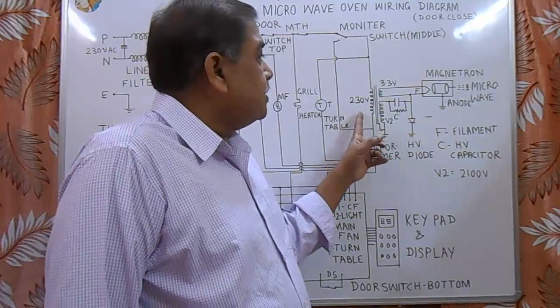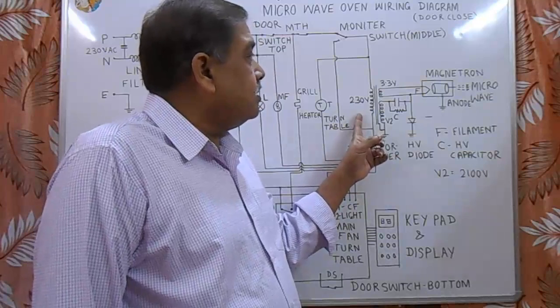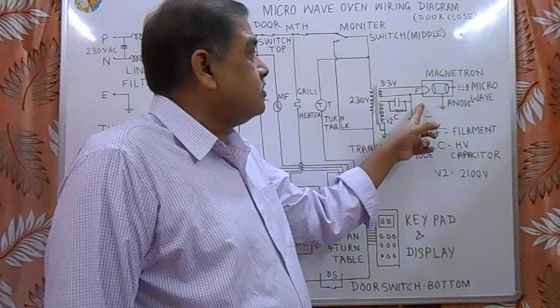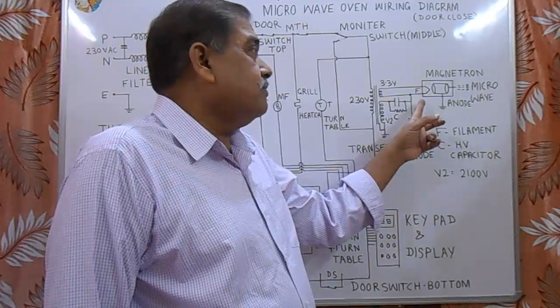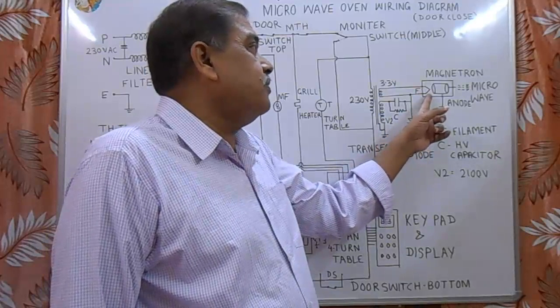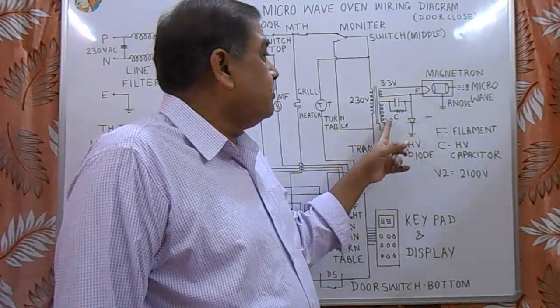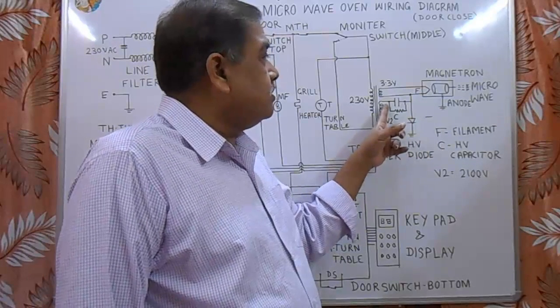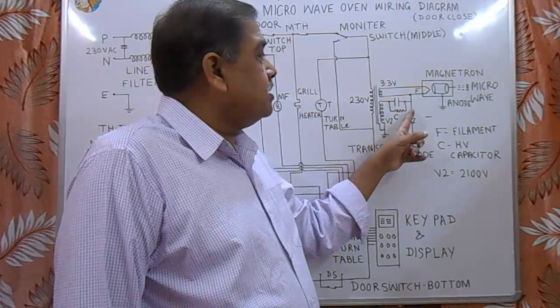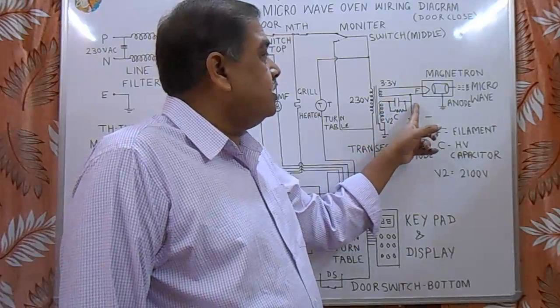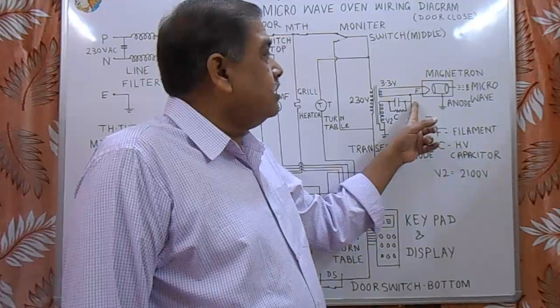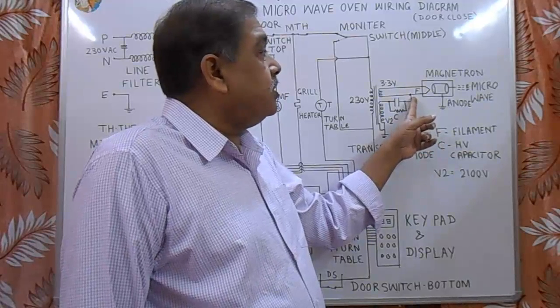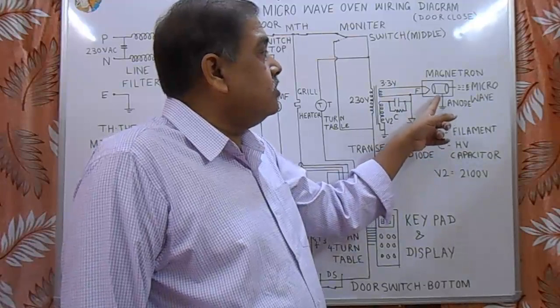This winding connects to the filament of magnetron. When filament heats, electrons are emitted from the filament. Then, this second winding is producing 2100V. With the help of this condenser and diode, it produces 4200V at the anode of diode and this 4200 negative voltage goes to the cathode of filament and positive goes to the anode.